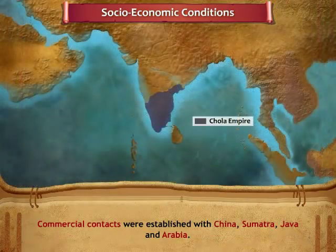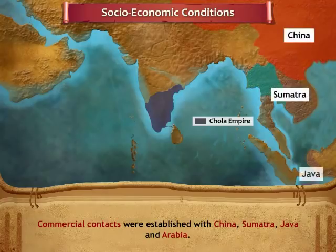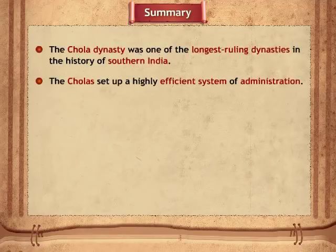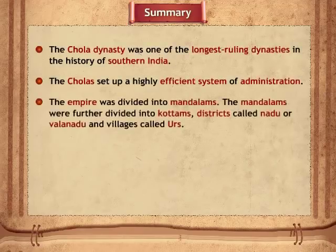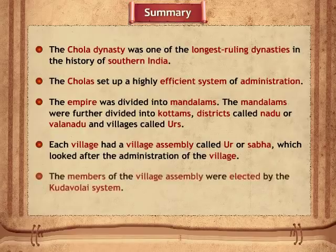Commercial contacts were established with China, Sumatra, Java, and Arabia. Let us now recap all the important points that we have covered in this module on the Chola administration and society.